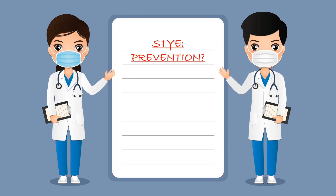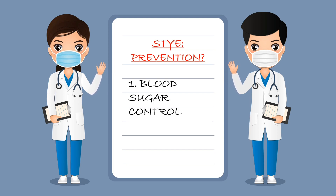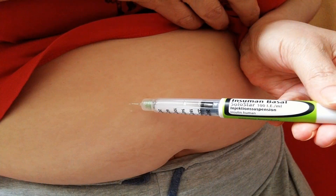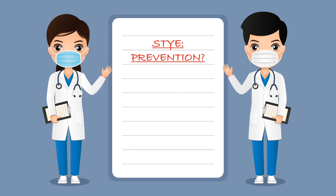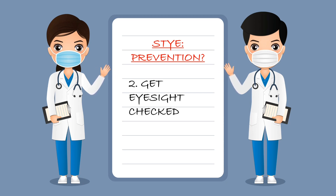Now, how can we prevent recurrent styes? First, if you are a diabetic, monitor your blood sugar levels and keep your diabetes under control — not just because you don't want a stye, but because you don't want any diabetes-related complications anywhere in your body. Second, get your eyesight checked to see if you need glasses.